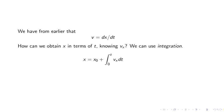We have from earlier that v equals dx dt. How can we go backwards? How can we obtain x in terms of t, knowing vx? We can use integration from calculus. x equals x0 plus integral of 0 to t, vx dt.